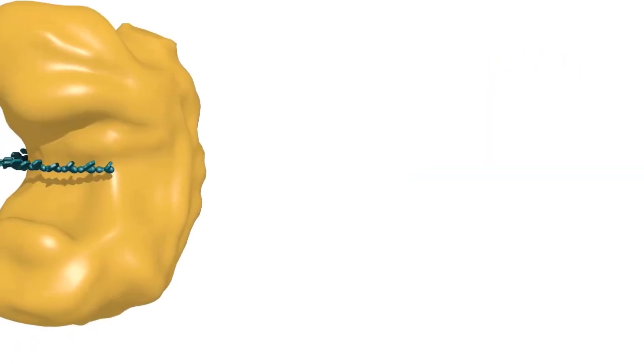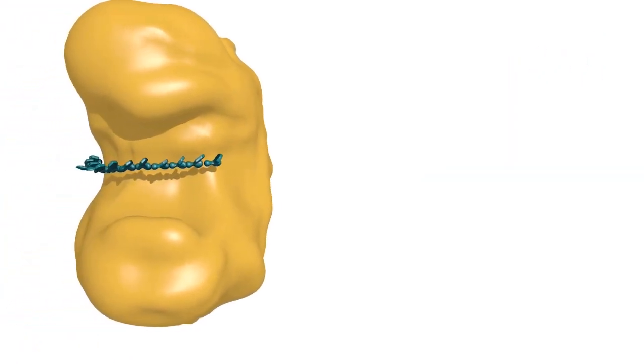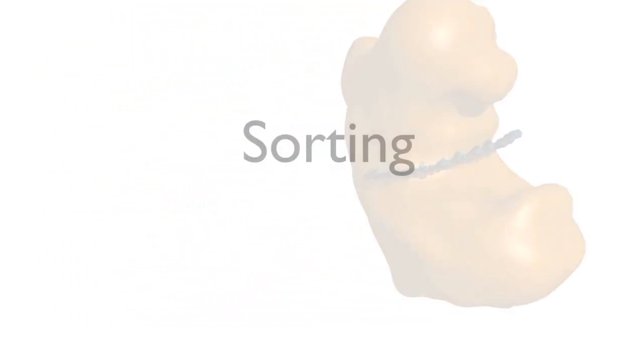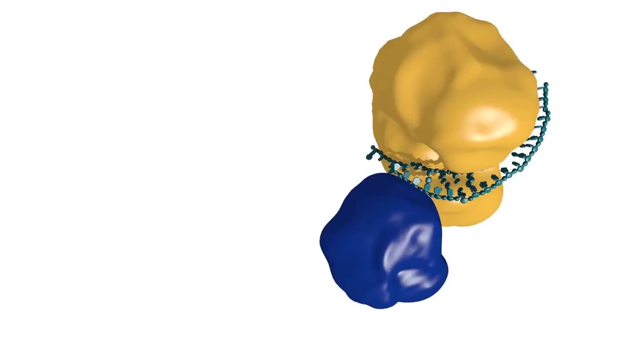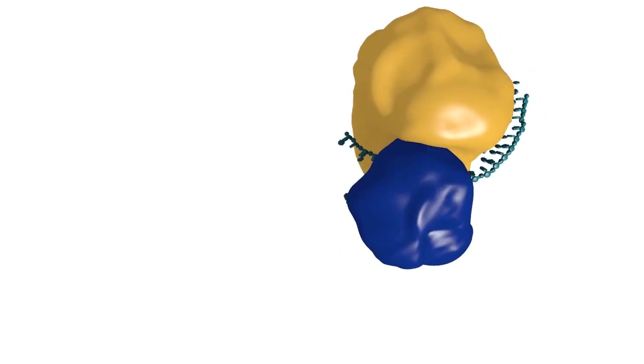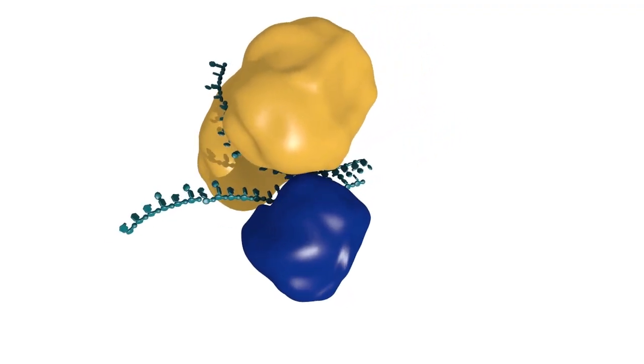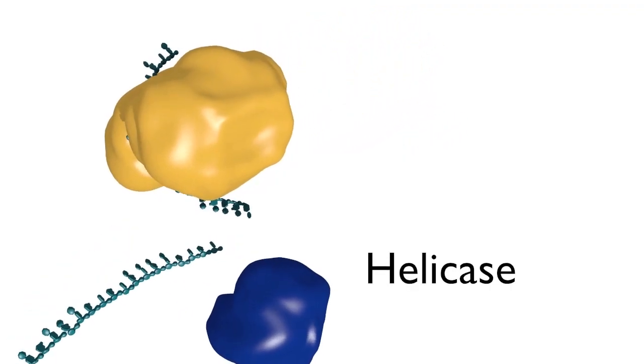The guide strand will ultimately be involved in determining which target RNAs will be silenced. This process of retaining one strand and removing the other is called sorting. For imperfect miR-miR-star duplexes, it is not certain how the passenger strand is identified and selectively removed, though the action of a helicase may well be helpful.